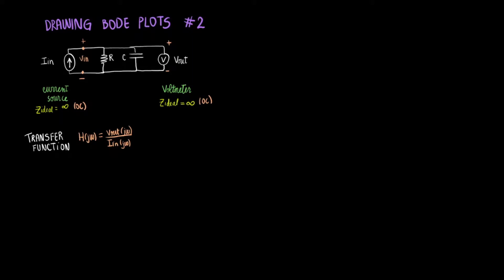This will allow us to simplify the input and output impedance circuits. So if we're trying to find Z in and we're trying to find Z out, you can notice that they will actually be identical. We will have the resistor in parallel with the capacitor.